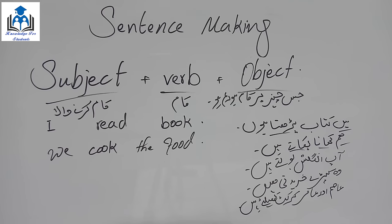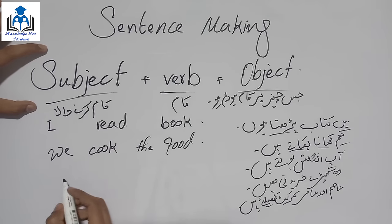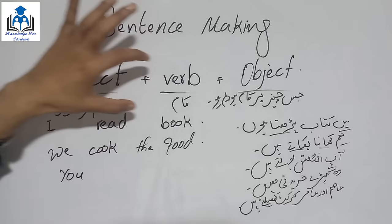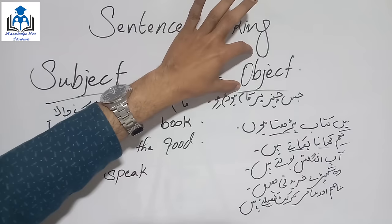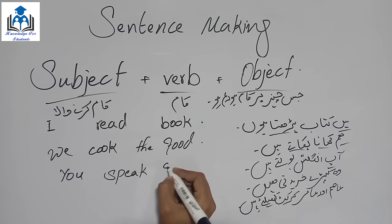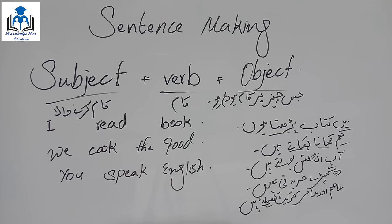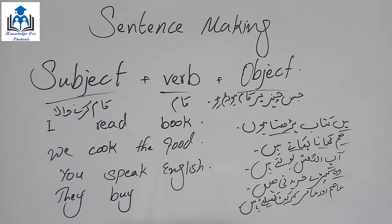Third statement: 'آپ انگلش بولتے ہیں' (You speak English). First, who does the action? آپ — 'You'. What do they do? بولتے — 'speak'. What do they speak? انگلش — 'English'. So: You speak English. Fourth statement: 'وہ کپڑے خریدتی ہیں' (They buy clothes). Who does the action? وہ (they, feminine plural) — 'They'. What do they do? خریدتی — 'buy'. What do they buy? کپڑے — 'clothes'. So: They buy clothes.